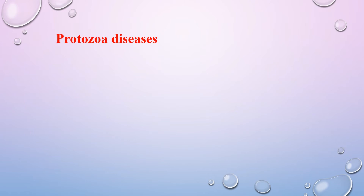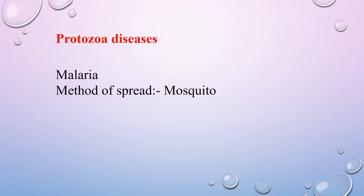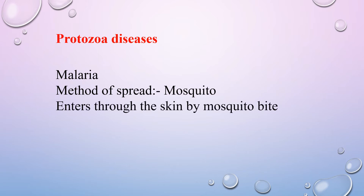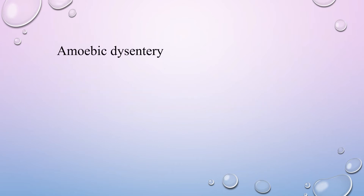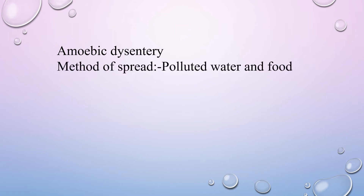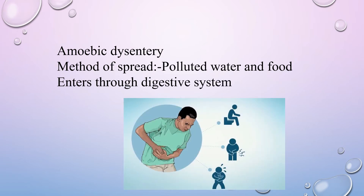Let's learn about protozoan diseases. The first is malaria, which spreads through mosquitoes and enters the skin via mosquito bites — it is also a kind of fever. Next is amoebic dysentery, which spreads through polluted water and food and enters through the digestive system. Symptoms include fever, abdominal pain, passing stool with blood, and diarrhea.